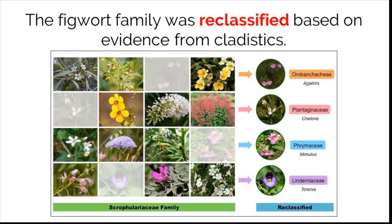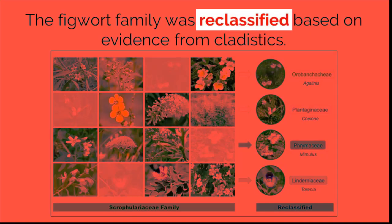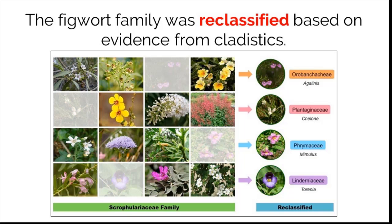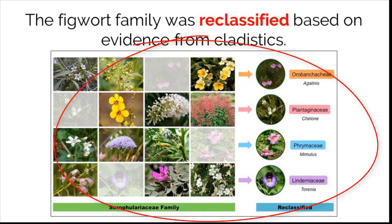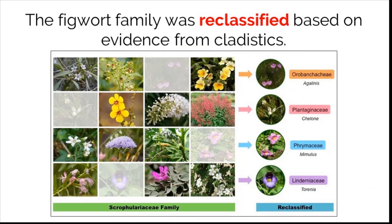Evidence from cladistics has brought about the reclassification of some taxonomy groups. Fig warts, for example, used to be classified into a very large family that contained over 275 different genera. Based on molecular evidence from examining chloroplast DNA, they were reclassified from one clade into five different clades, showing more divergence in morphology which made the groupings much more meaningful to scientists and the evolutionary history of the organisms.